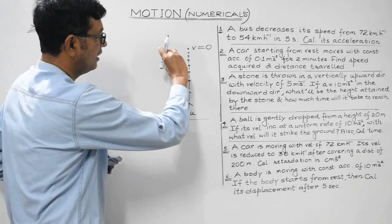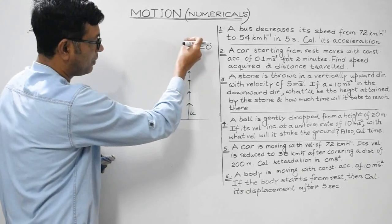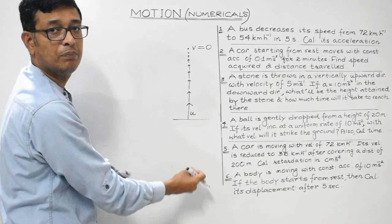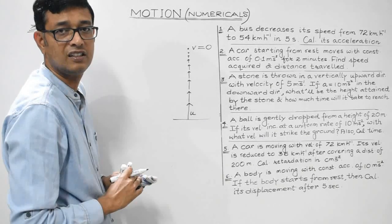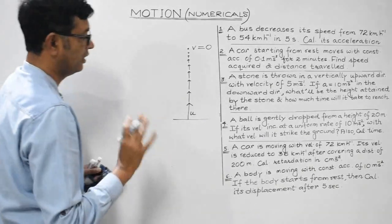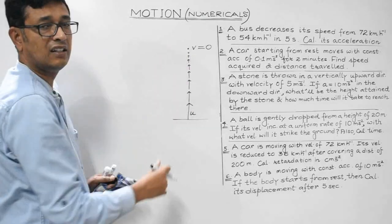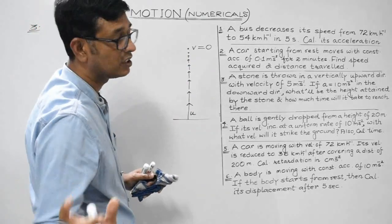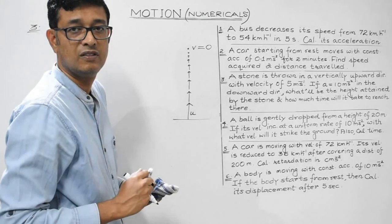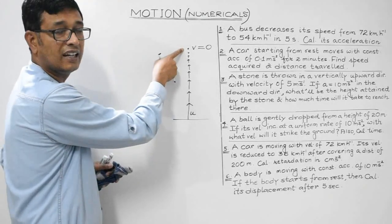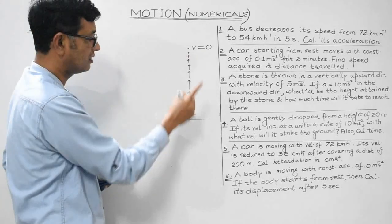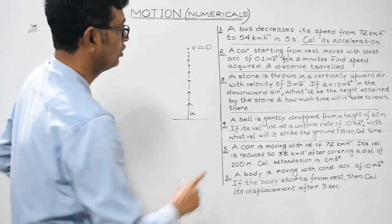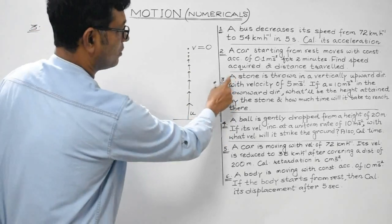After reaching the highest point, if air friction is neglected, the body retraces its path and comes back following the same route. So for a ball thrown vertically upward, the final velocity at the highest point is zero. This is the initial velocity and zero is the final velocity.